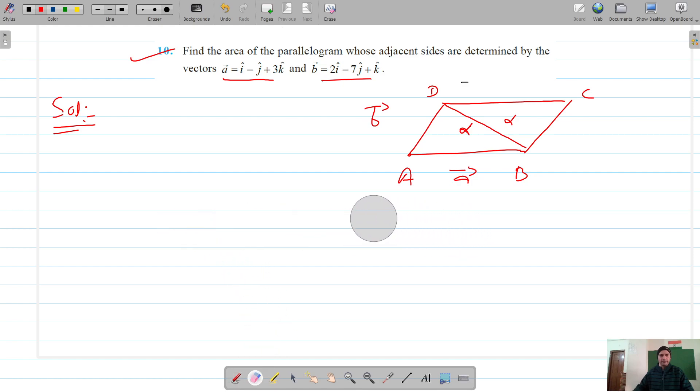We will find their cross product first and then their magnitude, which should give us the area. So a cross b is the determinant of i j k with components 1, -1, 3,